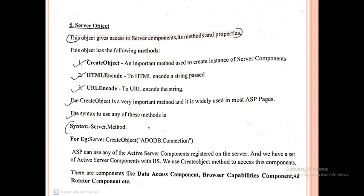The CreateObject method is used to create server-side objects through the Server object in ASP. A server-side object is created using this method. The syntax is server.CreateObject, which creates an instance of the specified server component.